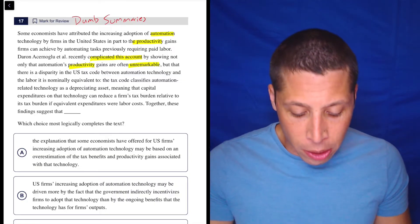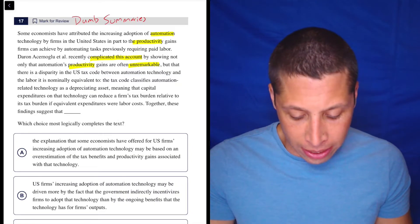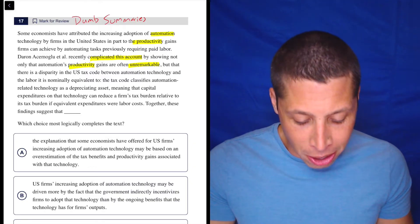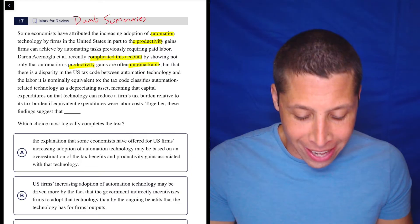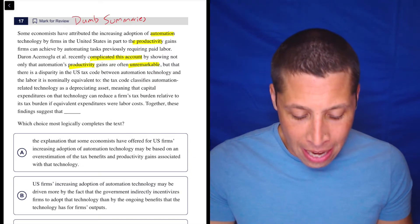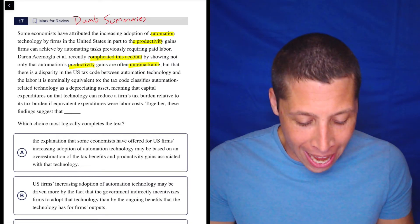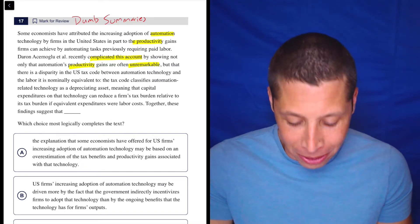But that there is a disparity in the U.S. tax code between automation technology and the labor it is nominally equivalent to. The tax code classifies automation-related technology as a depreciating asset.